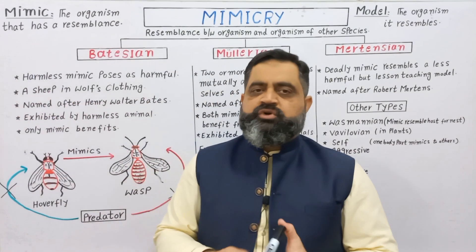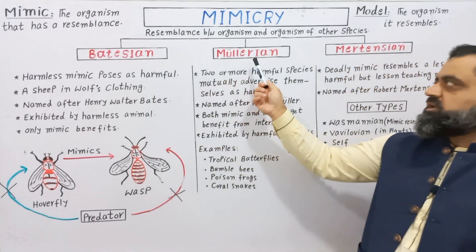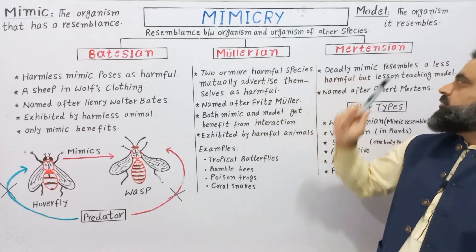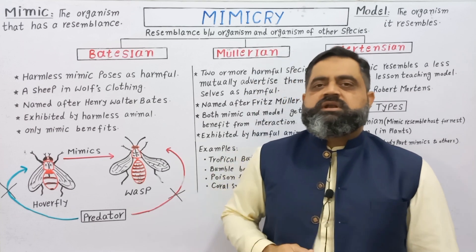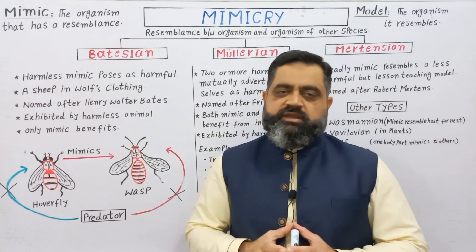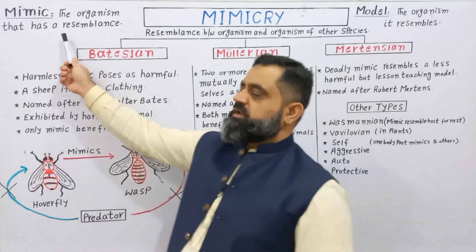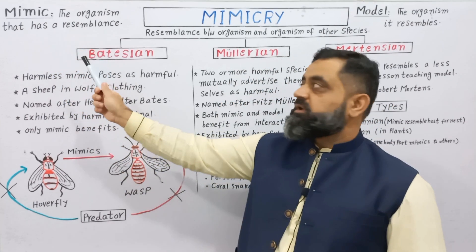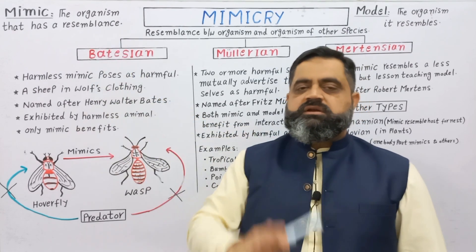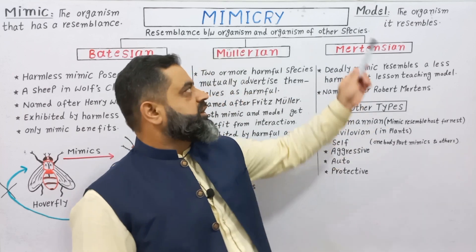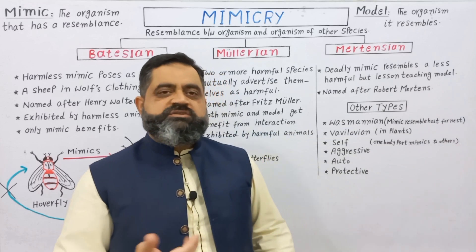Before we discuss types of mimicry in detail, there are two components in mimicry. Number one is the mimic — the organism that has the resemblance. The other component is the model — the organism it resembles is known as the model.